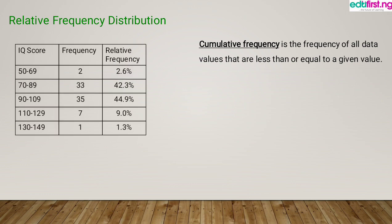Now, for the relative frequency distribution table: for the class 50 to 69, our frequency is 2. The relative frequency is 2 divided by 78, since the total sum of all frequencies — 2, 33, 35, 7, 1 — is 78. So 2 divided by 78, times 100, gives us 2.62% as our relative frequency. Similarly, 33 divided by 78 times 100 gives us 42.3%.